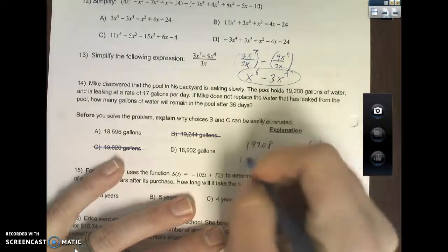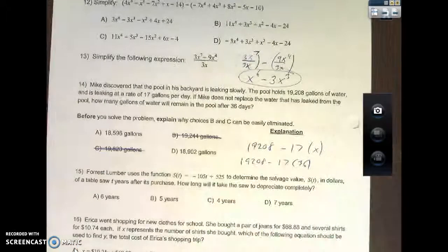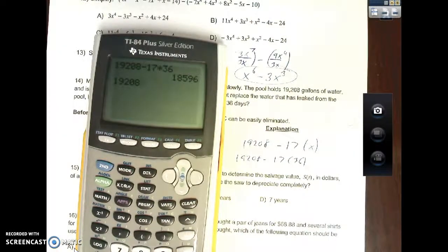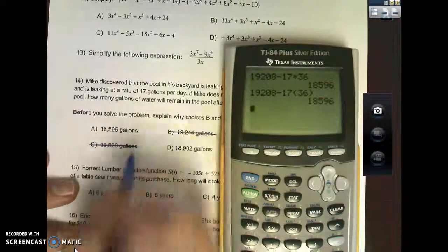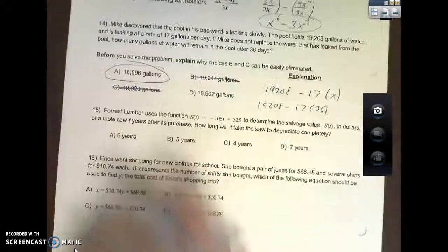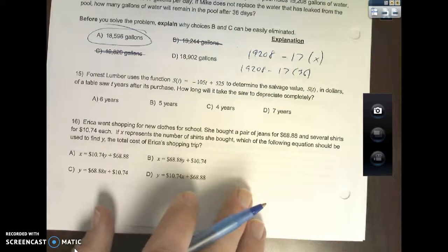So we have 19,208. Seventeen gallons a day we're losing, and it says after 36 days. So we're looking at 19,208 minus 17 times 36. That's 18,596.